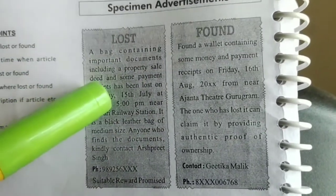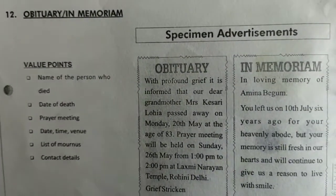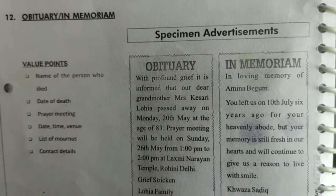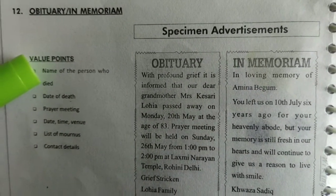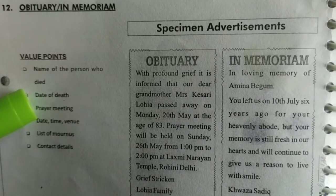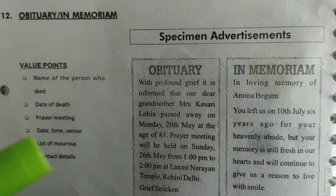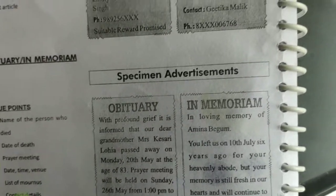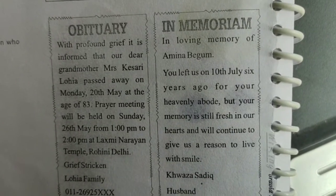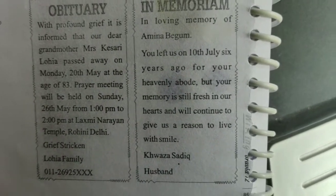You also have to write whom to contact, and obviously you have to give a suitable reward to the finder for a lost article. These are the examples of lost and found — one example for lost and one for found advertisement. Now coming to the next type, which is obituary. Obituary means death-related advertisements. In an obituary, you write the name of the person who died, date of death, and where and when the prayer meetings will be held — the date, time and venue — along with contact details. You can also give the names of related persons.